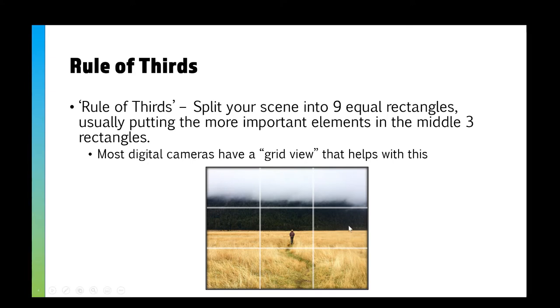You can see in this picture that we've got that misty, cloudy area in the top third of the grid. We've got the main object — the person walking away — in the middle three rectangles, and then the rest of the scene goes into the bottom.